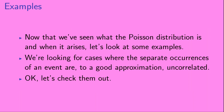Now that we've seen what the Poisson distribution is and when it arises, let's look at some examples. We're looking for cases where the separate occurrences of an event are, to a good approximation, uncorrelated.